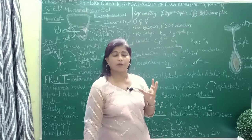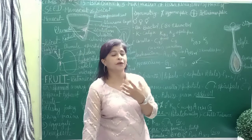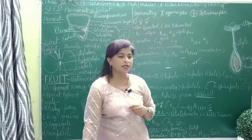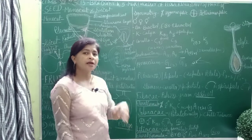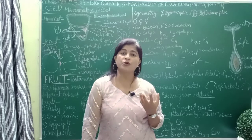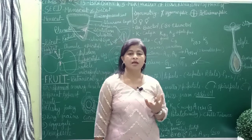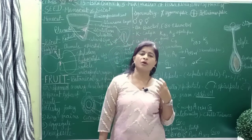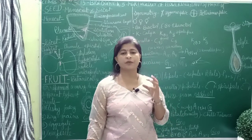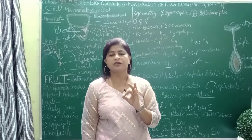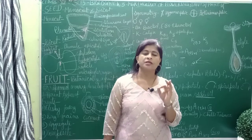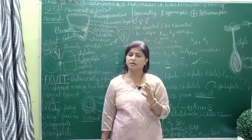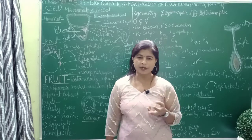The next type is aggregate fruits, which means apocarpous — where the ovary is polycarpellary. For example, in strawberry, when cut we can see multiple compartments. Custard apple is an example of a berry. Mango is an example of a drupe. Another type is composite fruit, which means a complete inflorescence converts into a fruit. Examples: custard apple for aggregate, mango for drupe, and pineapple for composite.